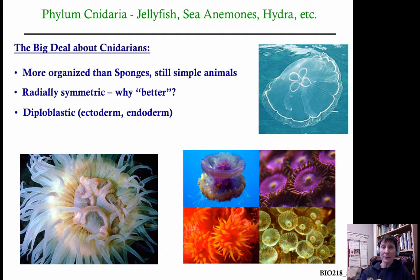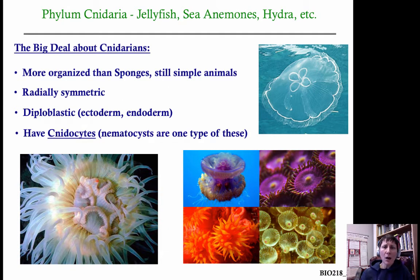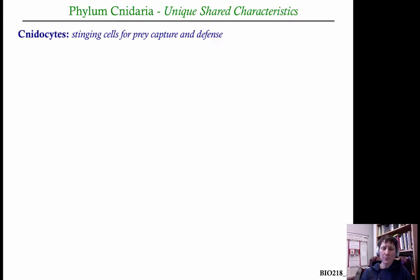These guys develop from two germ cell layers — from the ectoderm and endoderm — so they are diploblastic. The hallmark feature that gives this phylum its name is that they possess cnidocytes (the 'c' is silent), and nematocytes are one type of cnidocyte, though it's a bit more nuanced than that.